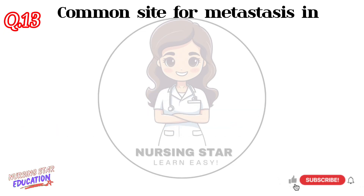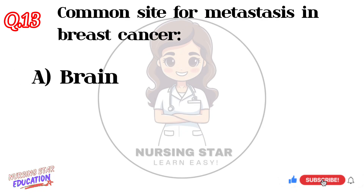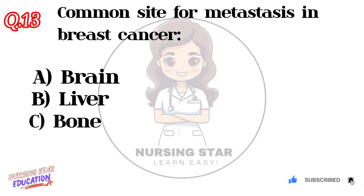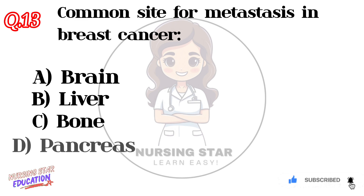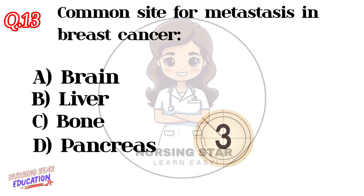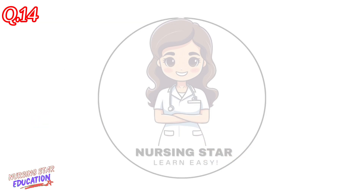Question number thirteen: Common site for metastasis in breast cancer — Option A: Brain. Option B: Liver. Option C: Bone. Option D: Pancreas. Correct answer: C — Bone.